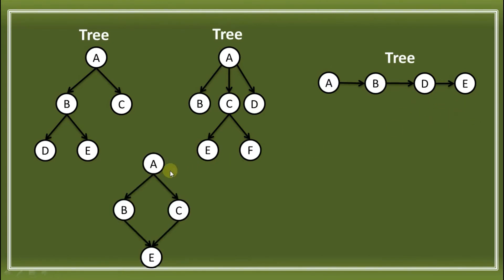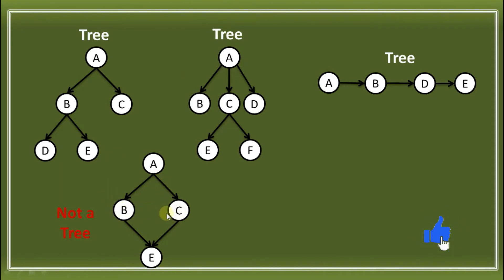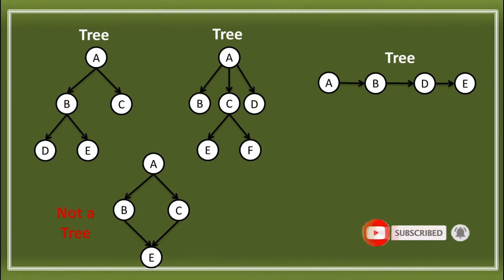Let's have a difficult example. Is this a TREE? This is NOT a TREE, because B and C have the same child. B and C are children of A, so logically they are siblings — but they cannot share the same child, which is E. So that is not considered as a TREE.